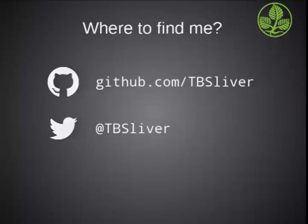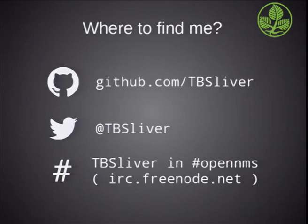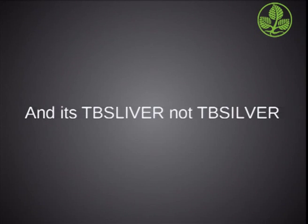Where to find me? GitHub.com/tbsliver is my GitHub account. I am @tbsliver on Twitter. And you'll find me in #opennms on Freenode under the name tbsliver. And it's tbsliver, not silver. The number of people that get that wrong is impressive. Thank you.